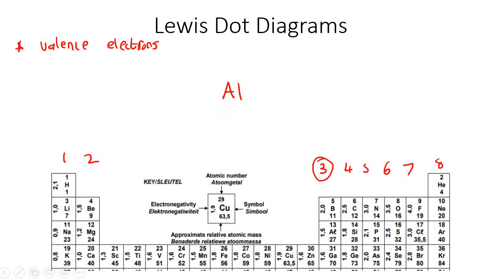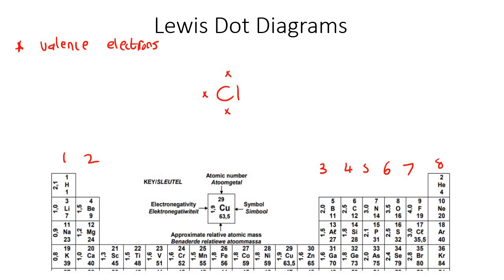Let's quickly do the Lewis diagram of chlorine. Chlorine is in group seven, so you're going to put one dot in each of the four places. Now that all four places have been filled up, you can go back and match them up again. So that gives you five, six, seven.